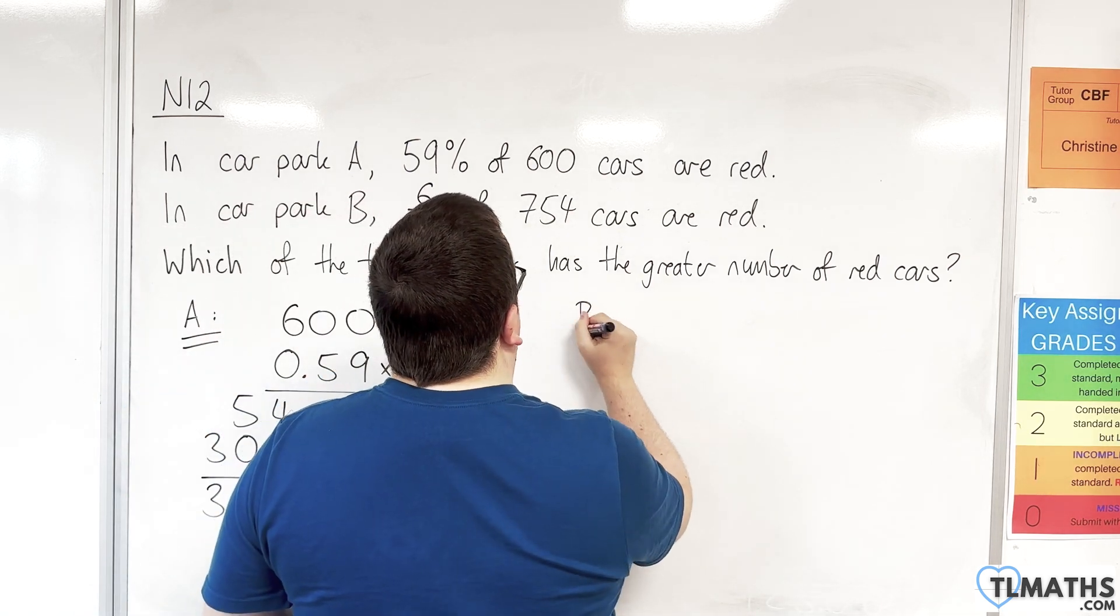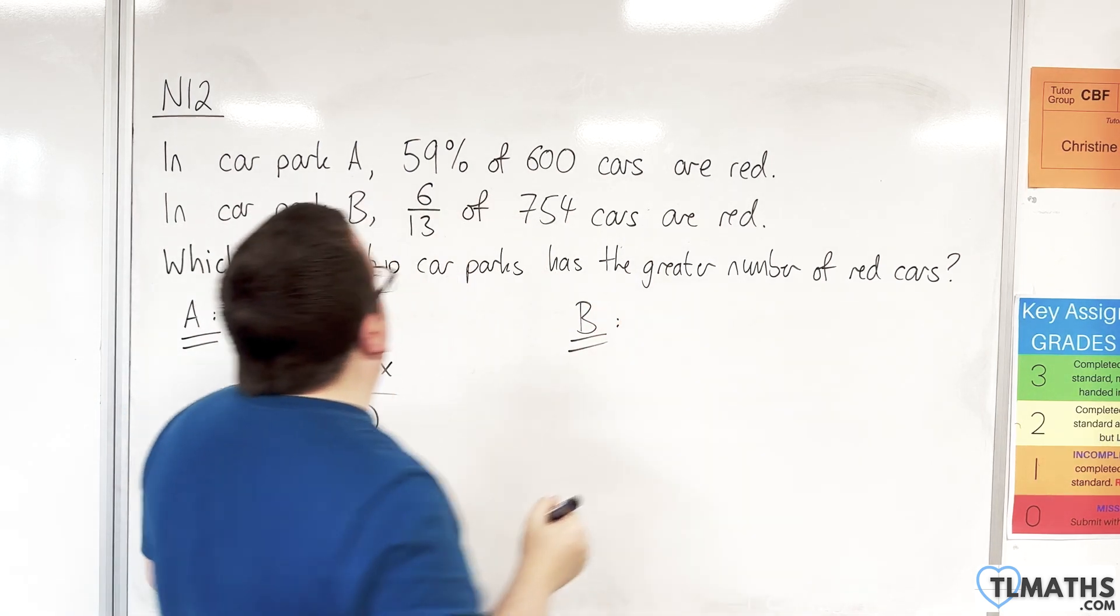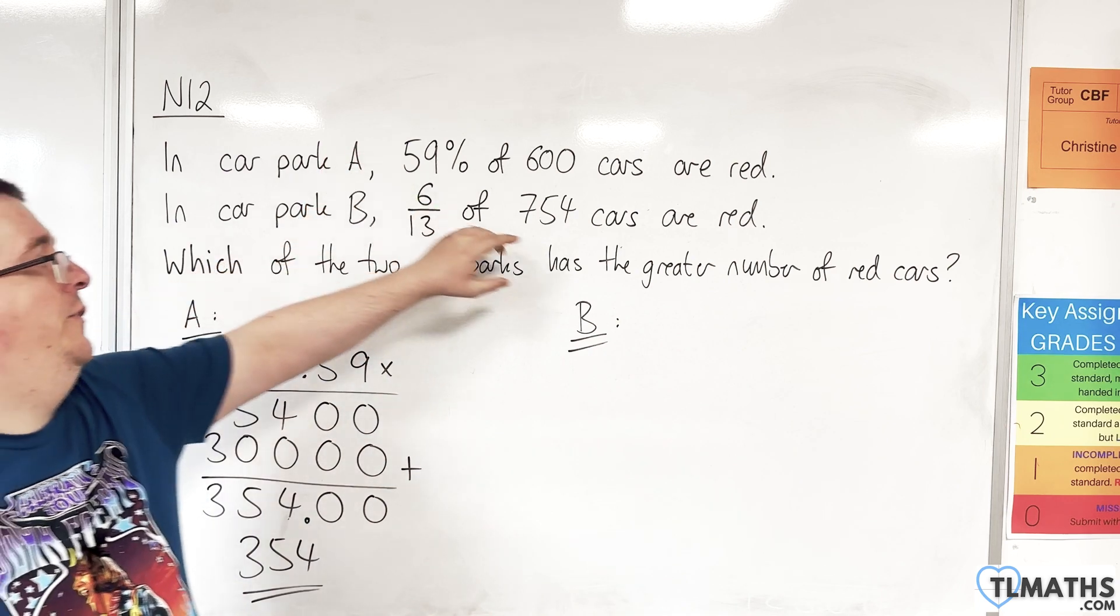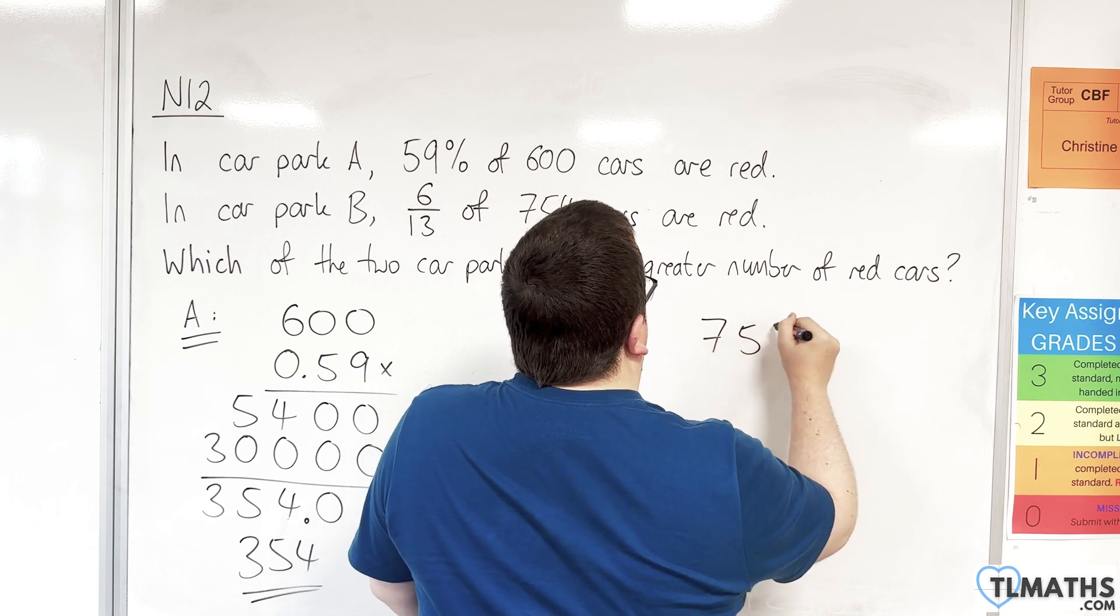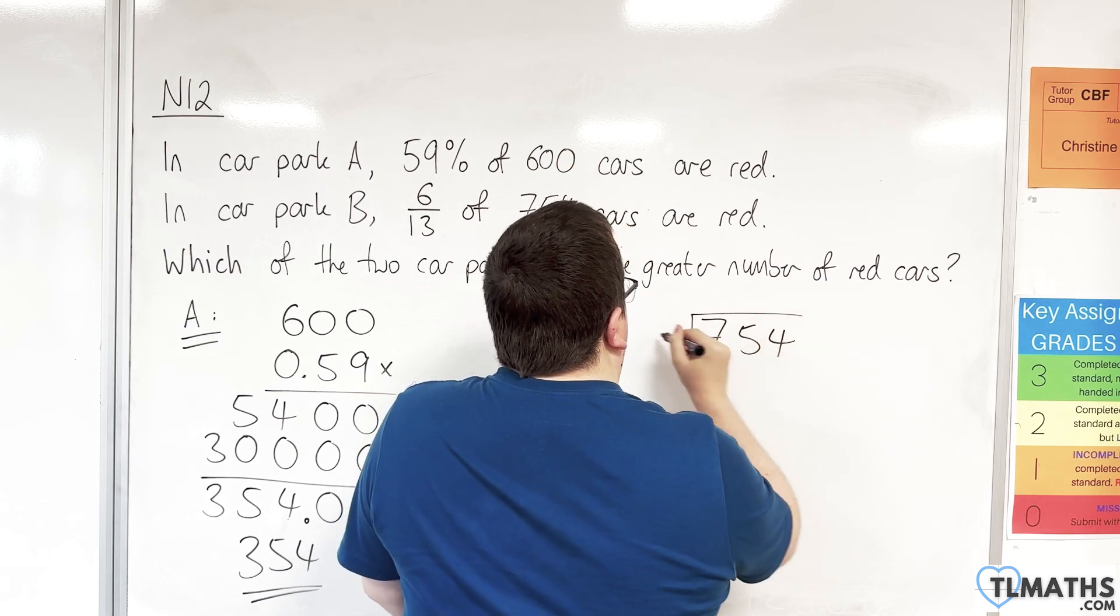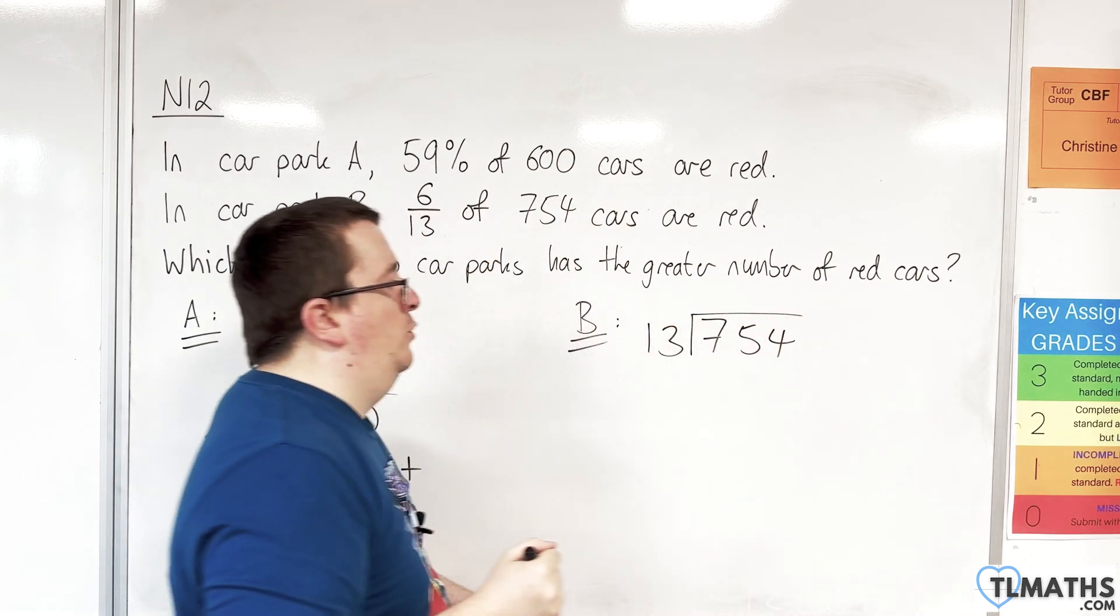For car park B, we need to calculate 6/13 of 754. I'm going to first of all calculate what 1/13 is by dividing 754 by 13.